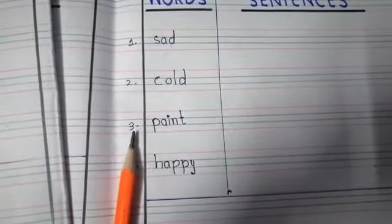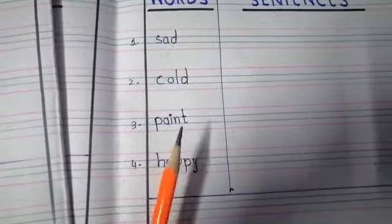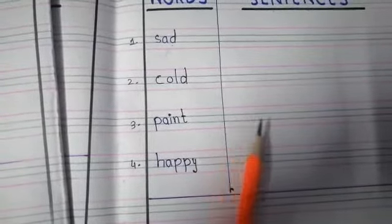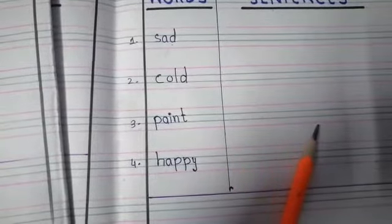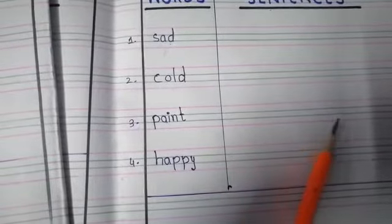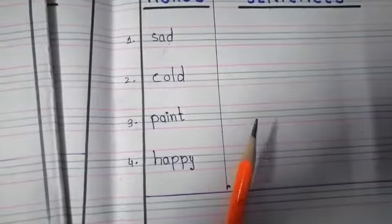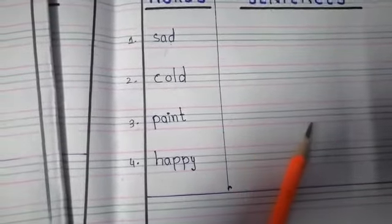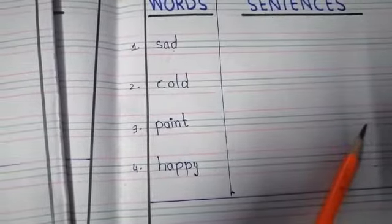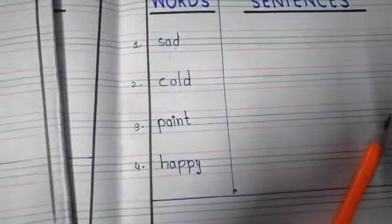Number three word is paint. First example is I like to paint a picture. Number two example, my mother gives me a paint box.